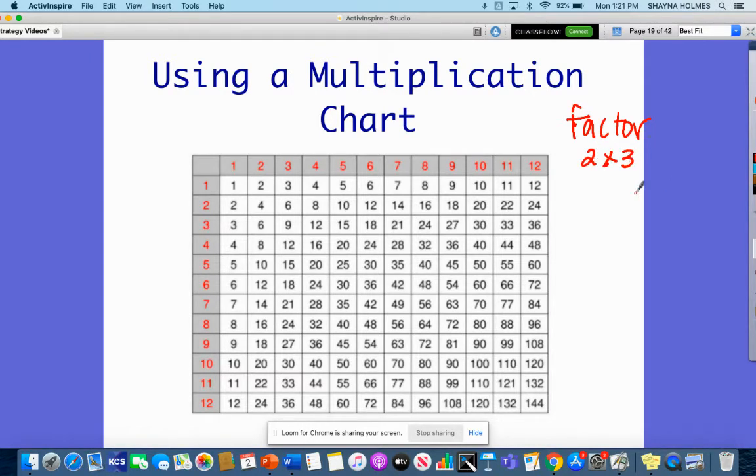Two and three are my factors. Now we also have another vocabulary word called multiple or multiples. That is all of these numbers that we have inside of our multiplication chart. The multiples are our products or our answers. So for two times three, six is a multiple.